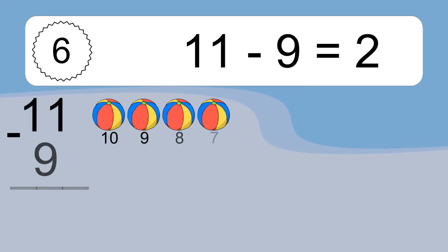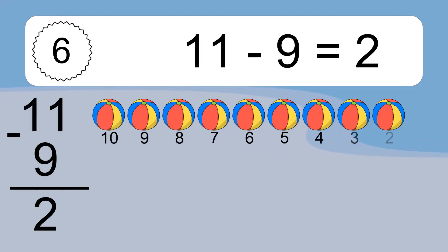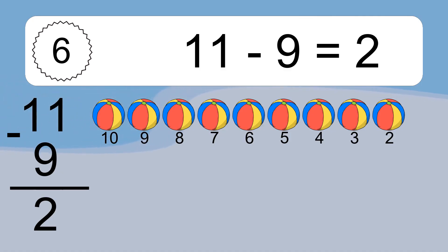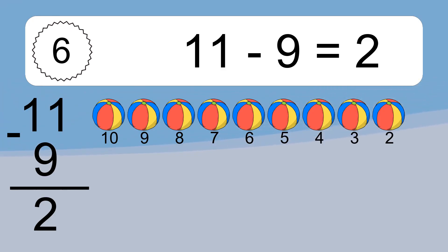11 minus 9 equals 2. Let's count it. 10, 9, 8, 7, 6, 5, 4, 3, 2.